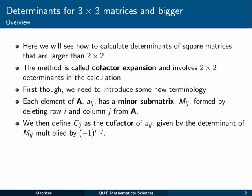Let's see, each element of A, let's call it aij, has a minor submatrix. So that's some new terminology, a minor submatrix, which we call Mij. And it's formed by deleting row i and column j, the i and j that we're talking about here, from the matrix A.